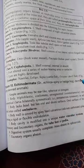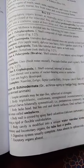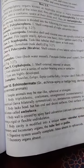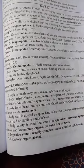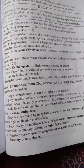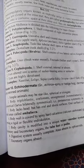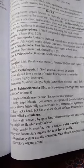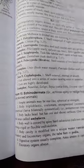The tube feet are called podia, and they are used for locomotion. The digestive system is complete and an anus is also present. Excretory organs are absent.